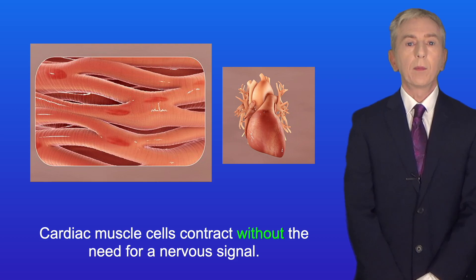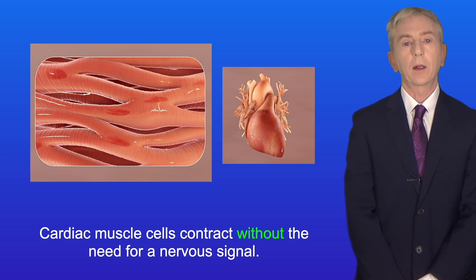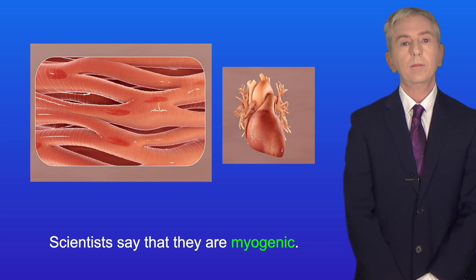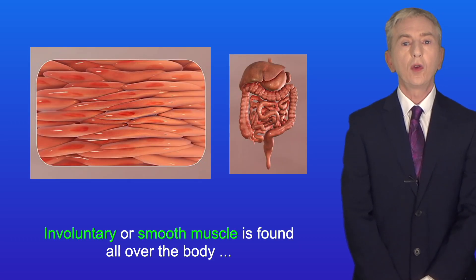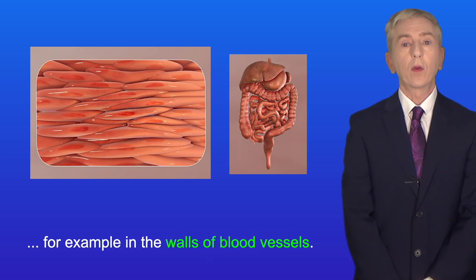Cardiac muscle cells contract without the need for a nervous signal — scientists say that they are myogenic. Involuntary or smooth muscle is found all over the body, for example in the walls of blood vessels.